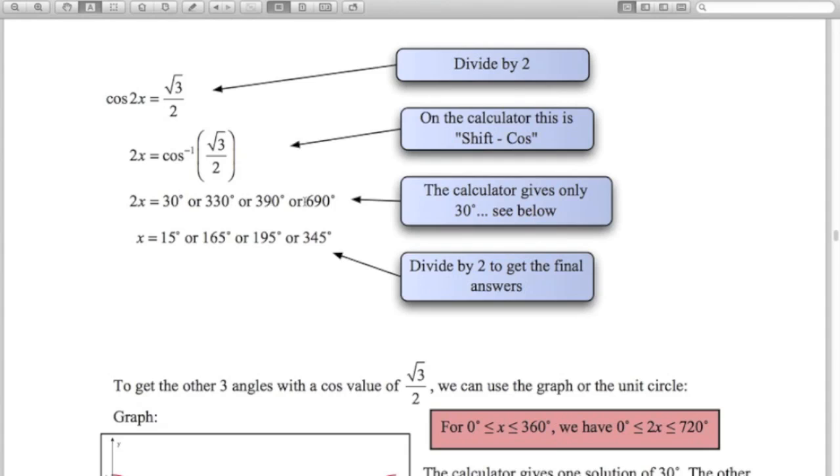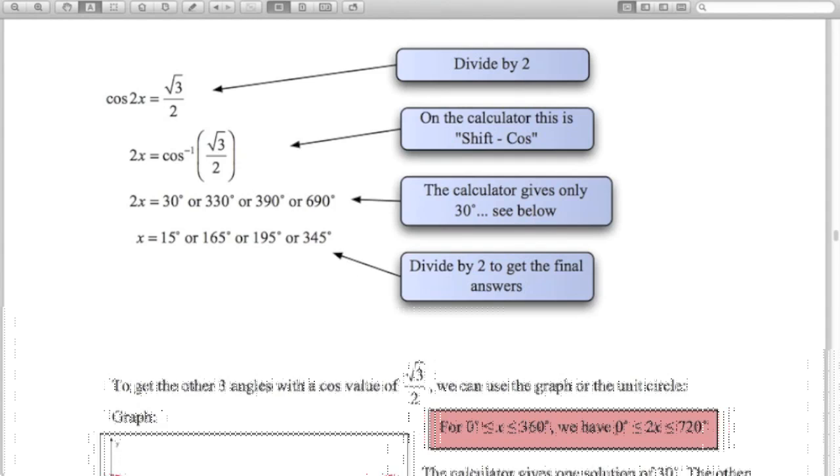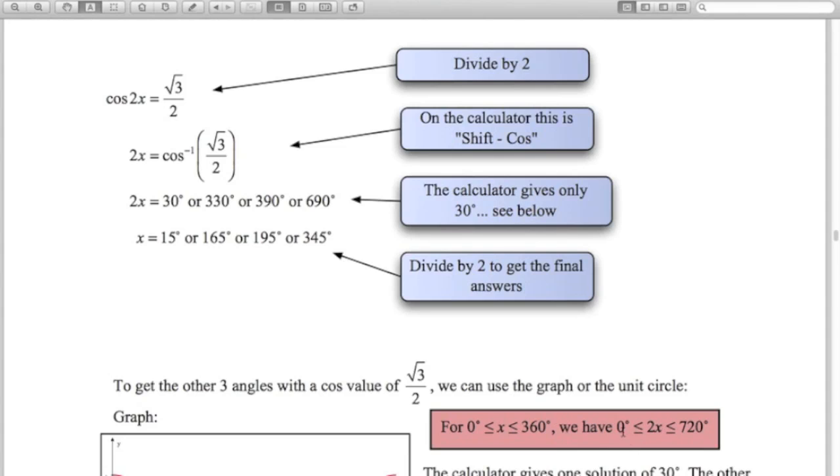The reason I've done that is because our final answers, we have to divide by 2 from this step here. So if we divide all our answers by 2, you can see that all our solutions now are in the range we wanted from 0 to 360 degrees. So another way you could think of it is our 2x values have got to be between 0 and 720. That's the basic method for finding your 4 solutions here.